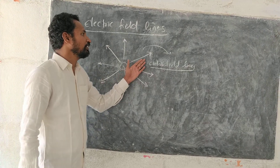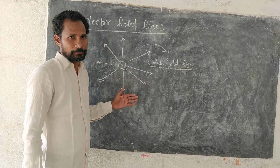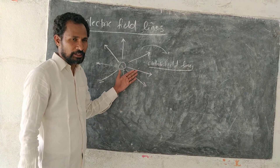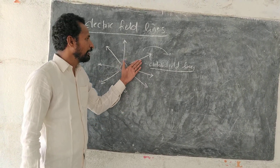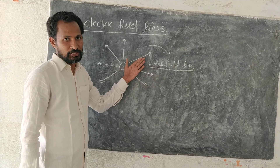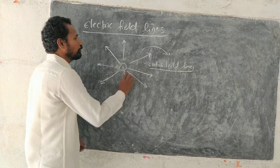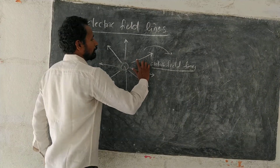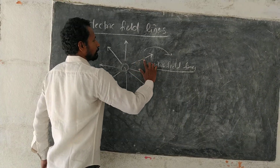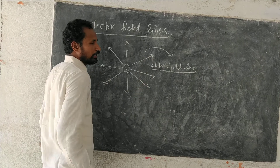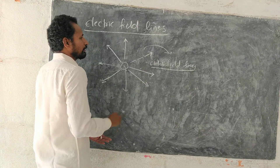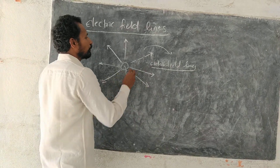These are all continuous lines — electric field lines are continuous, not discontinuous. So we do not represent them as broken lines. They are continuous.